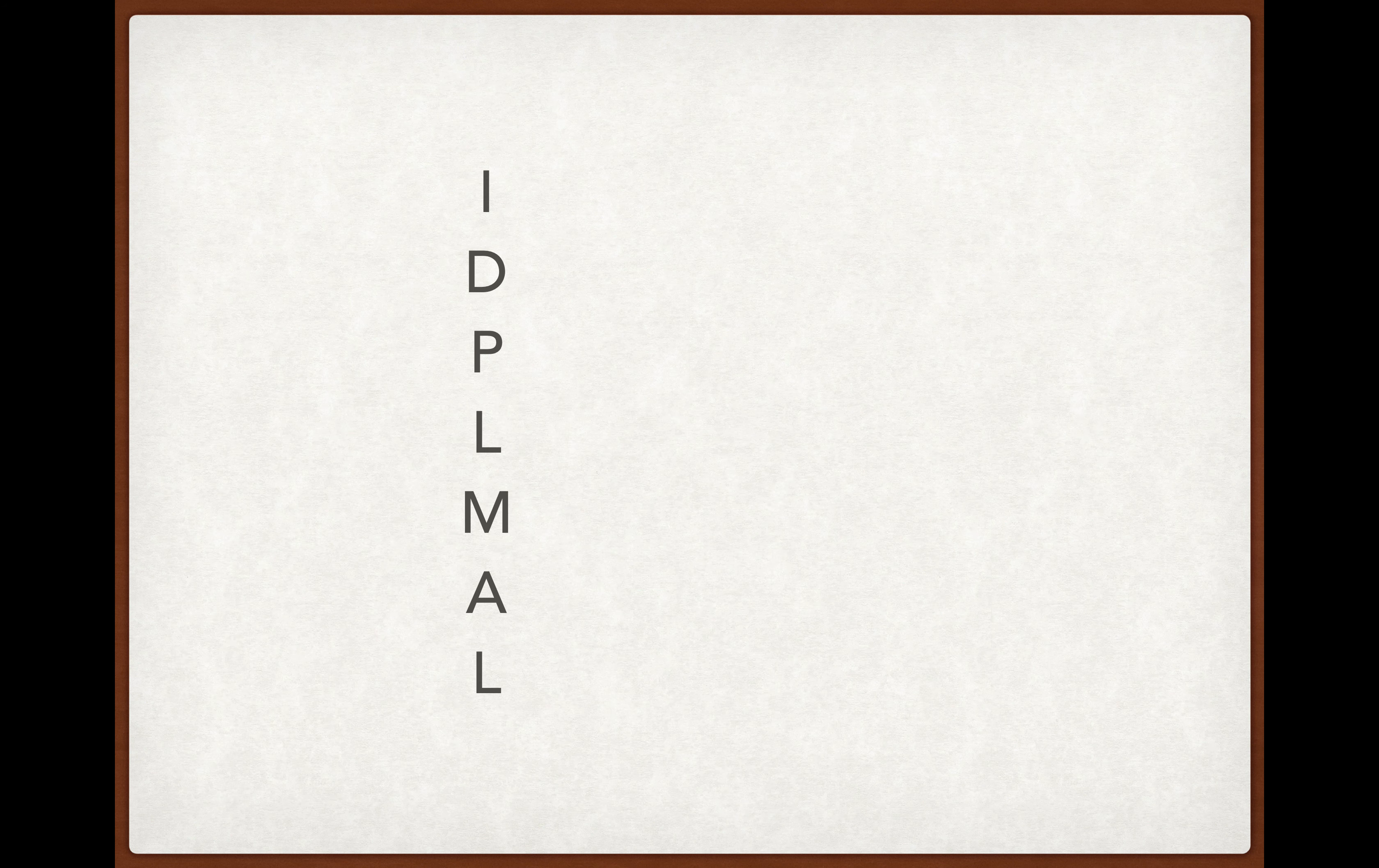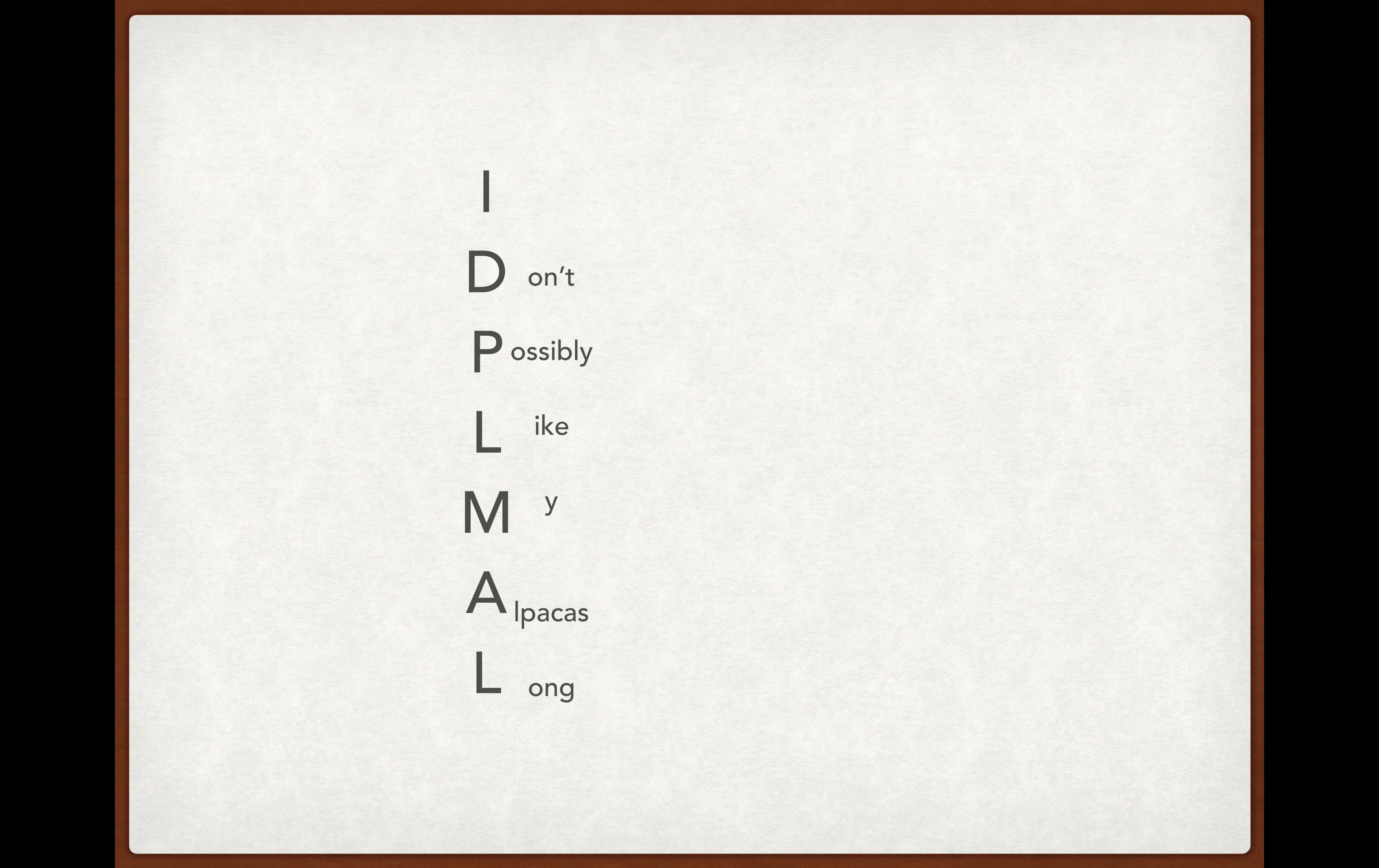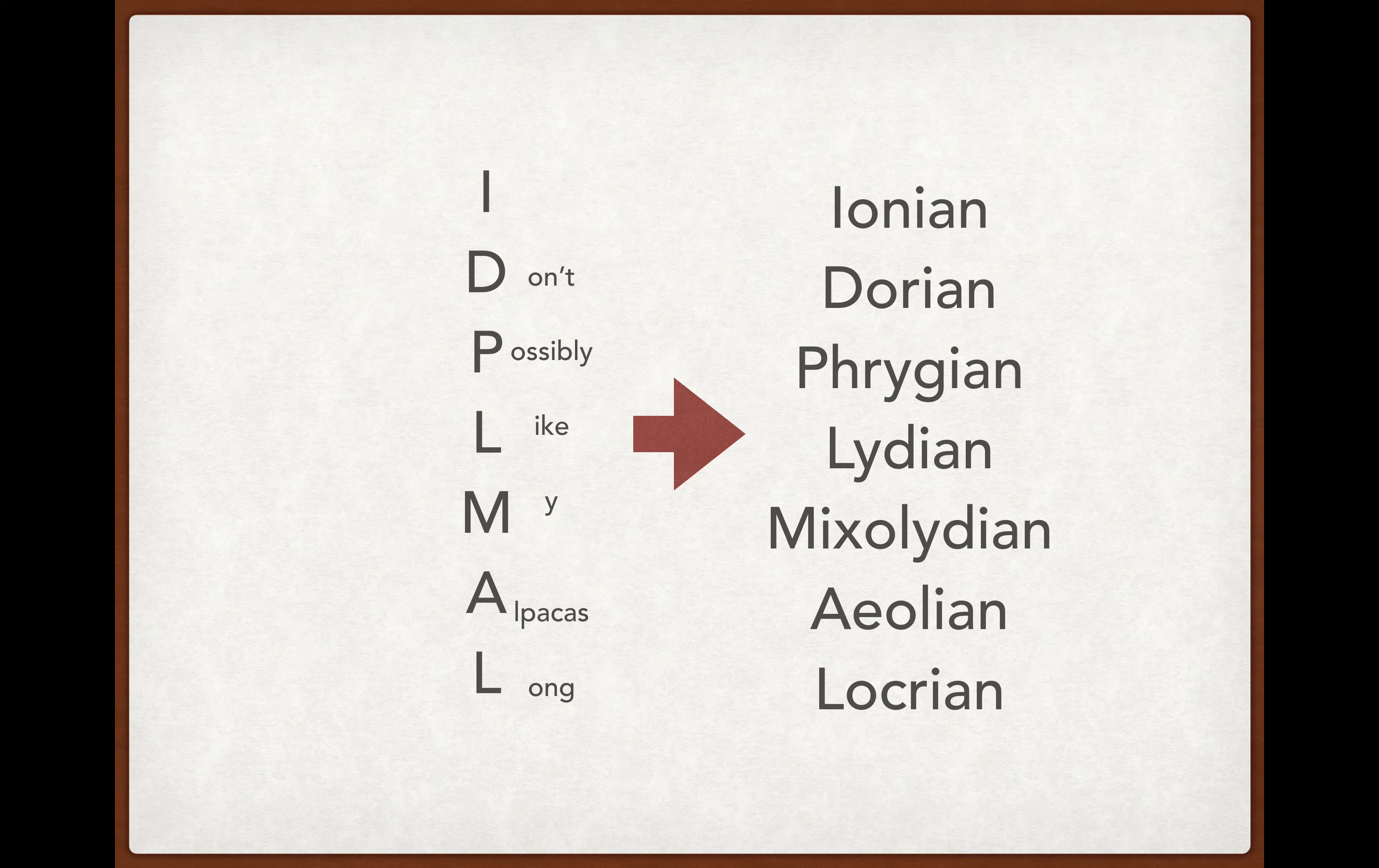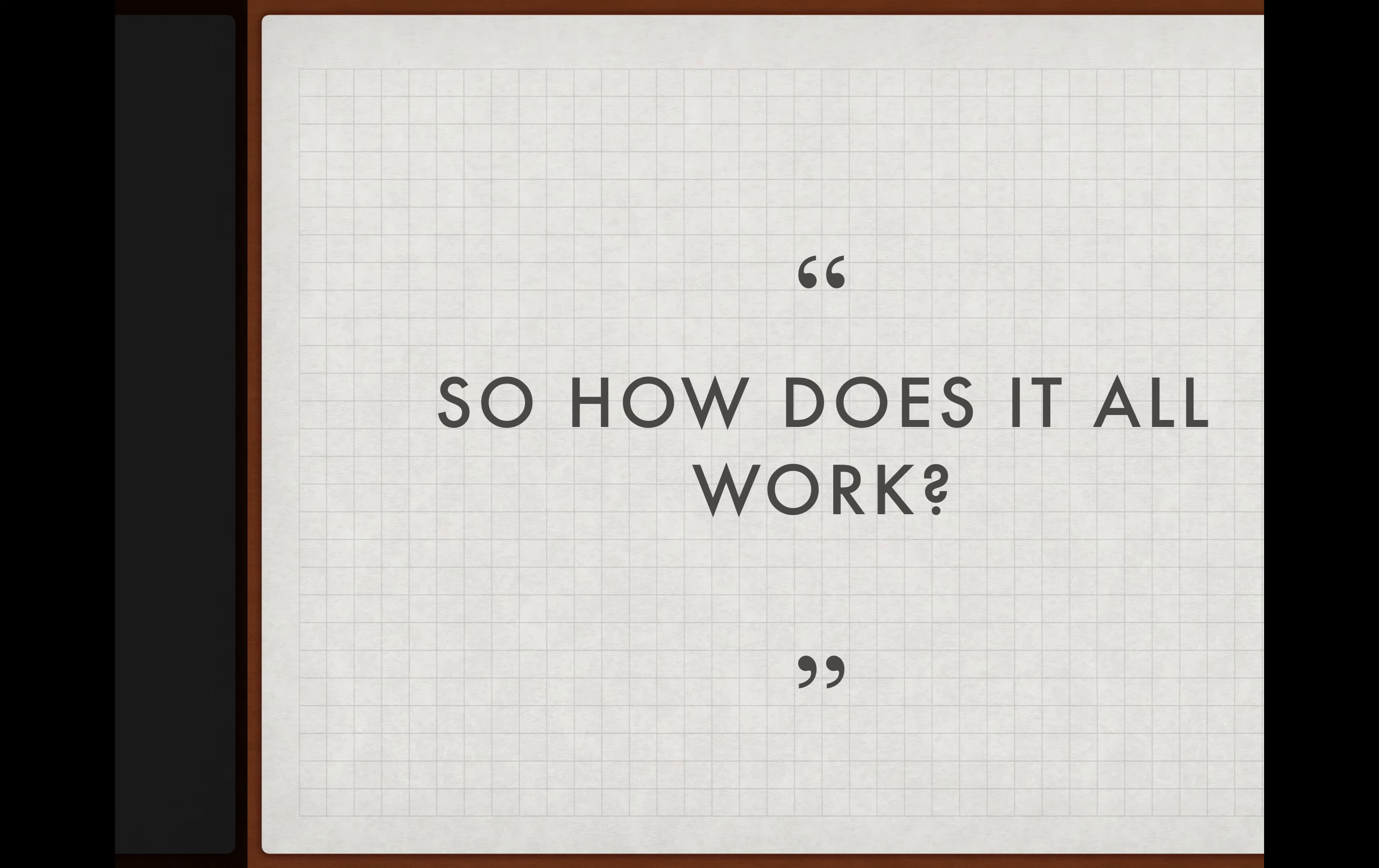Think of this acronym: IDPLMAL, or 'I Don't Possibly Like My Alpacas Long.' This translates to the modes: Ionian, Dorian, Phrygian, Lydian, Mixolydian, Aeolian, and Locrian. You might be asking how it all works.